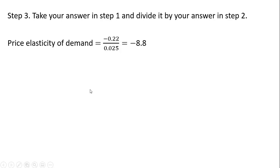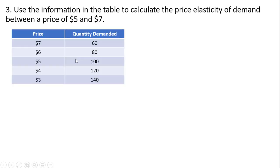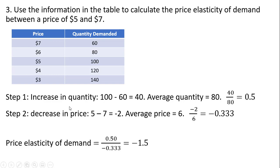Let's move on to the next problem. Use the information in the table to calculate the price elasticity of demand between a price of $5 and $7. The table shows price and quantity demanded. Between $5 and $7, quantity goes from 60 to 100 — a 40-unit increase. The average quantity is the average of 60 and 100, which is 80. Dividing 40 by 80 gives 0.5 in step 1.